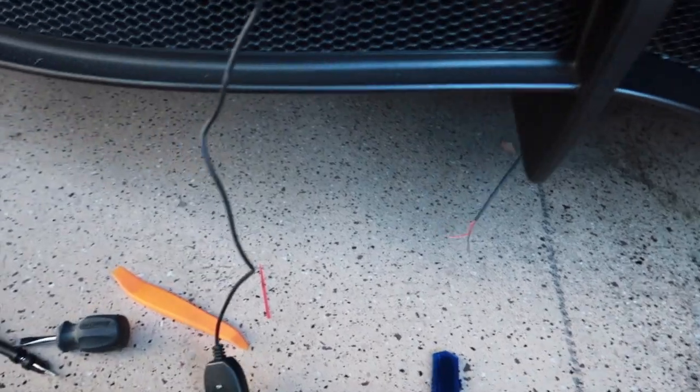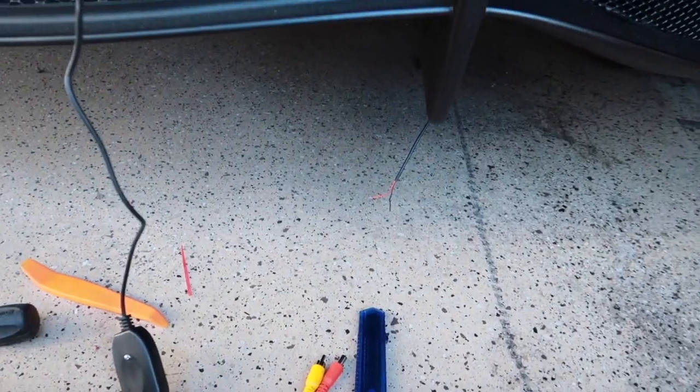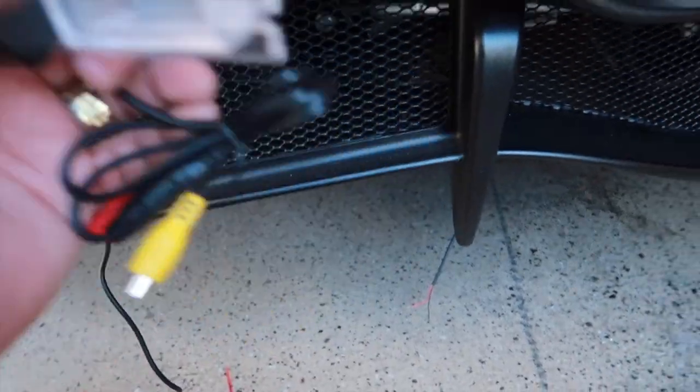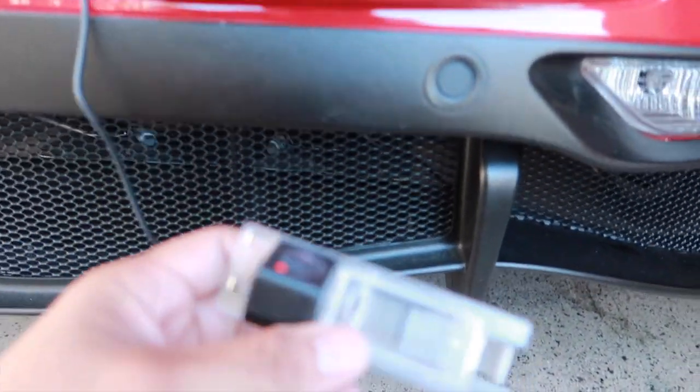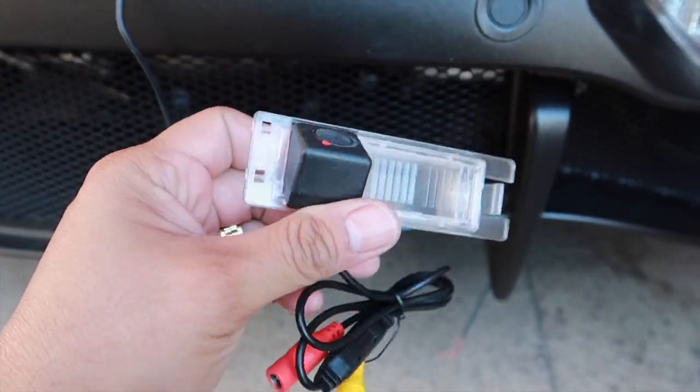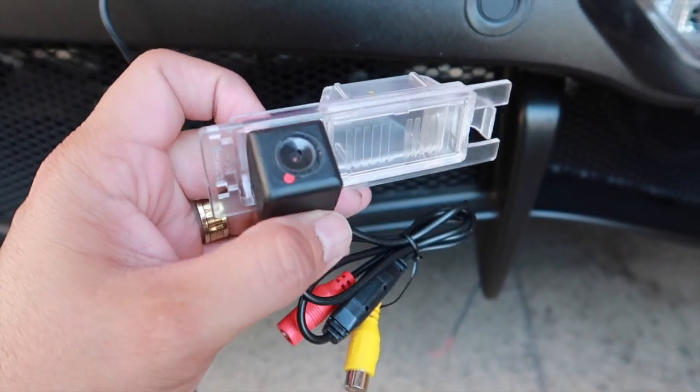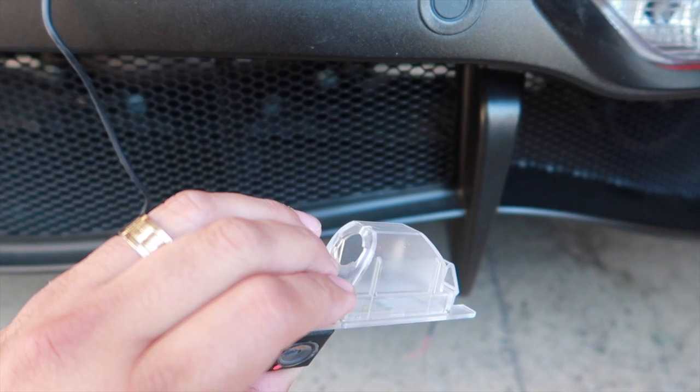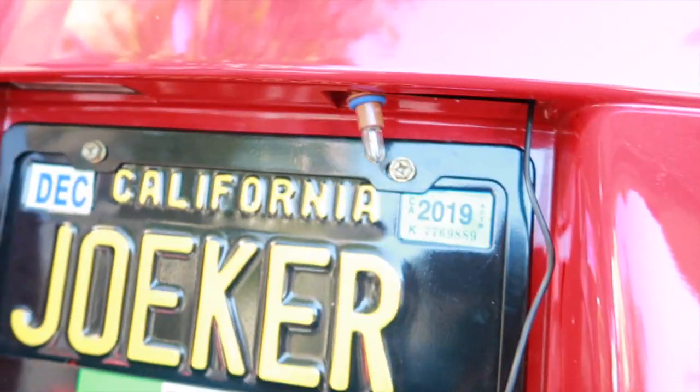One of our forum members over at the 4C forum told us he went ahead and got a reverse light for a Fiat Punto on eBay. And that's what I got. I just got this rear camera that already has the connection for the tail light right there.